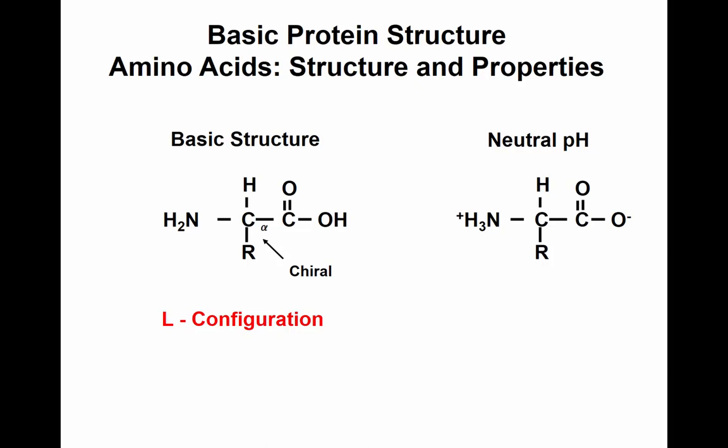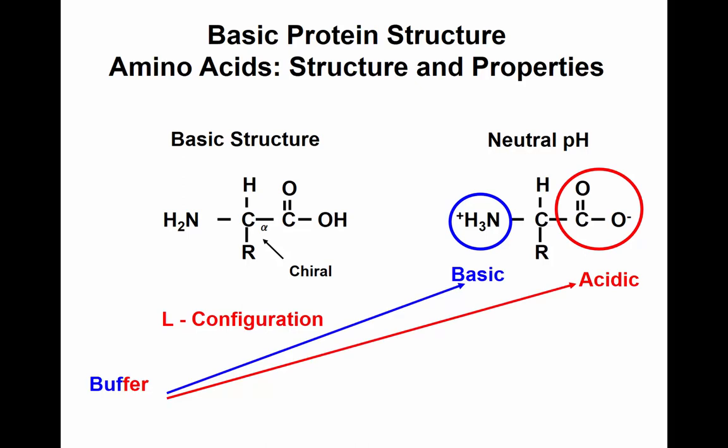At neutral pH, what happens: the amine group picks up a proton — a H+ — so it carries a positive charge. The carboxyl group, being acidic, wants to give out a proton — so it donates a proton and becomes negatively charged. Bases like to pick up protons; acids like to give protons. Having both a base and an acid at the same time makes it a buffer. Proteins are excellent buffers because they have amine groups and carboxyl groups. A buffer resists change in pH. If you're titrating with HCl — giving the system protons — the carboxyl group will pick up a proton, so the pH does not drop. If you're titrating with NaOH — giving OH minus — the amine group will give its proton, neutralizing the pH. That's how it functions.